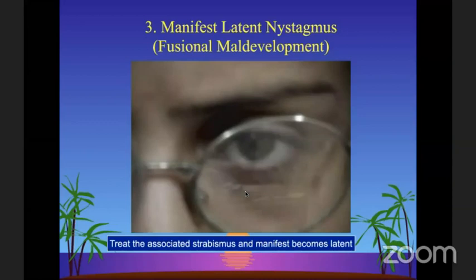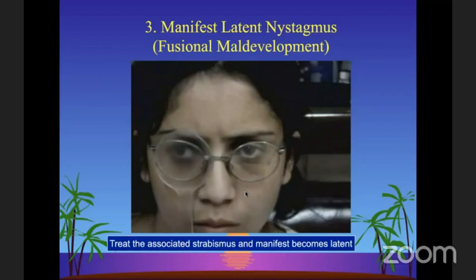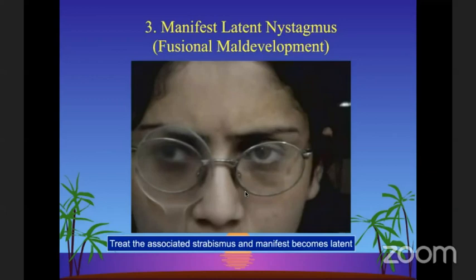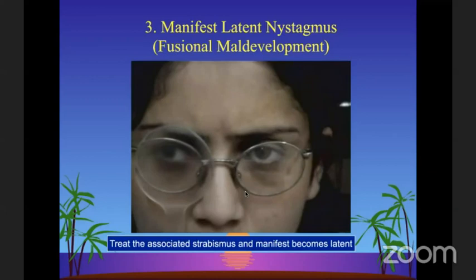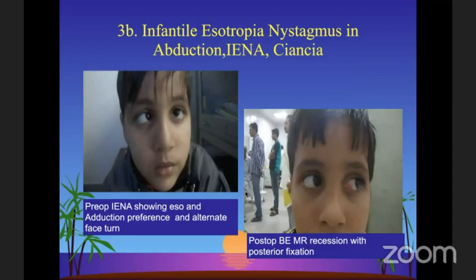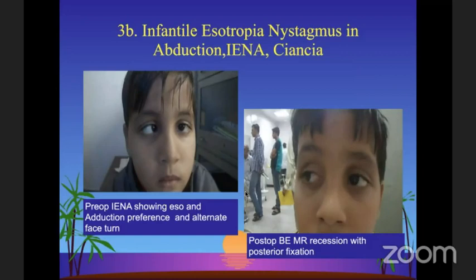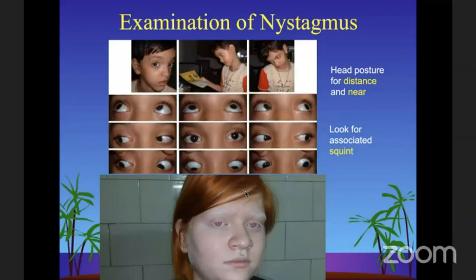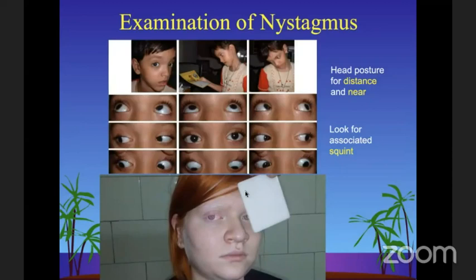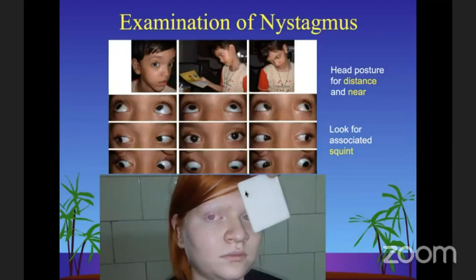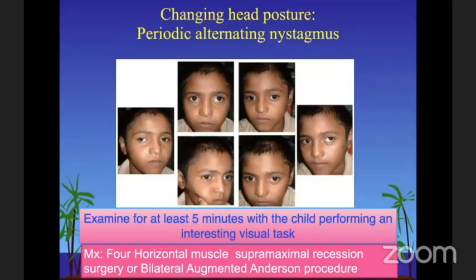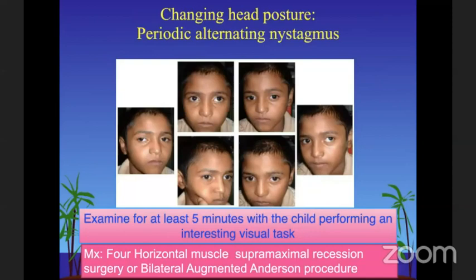Manifest latent nystagmus may have an associated squint. When you break the squint with a Spielmann occluder and the intermittent divergent squint becomes manifest, the nystagmus also manifests. Infantile esotropia may have Ciancia syndrome or IENA, with an adduction null fixation. This may require, in addition to esotropia correction, a posterior fixation or faden on the medial recti to correct the head posture. Always observe such children for at least five minutes to not miss a periodic alternating nystagmus, which may change direction every three to five minutes.